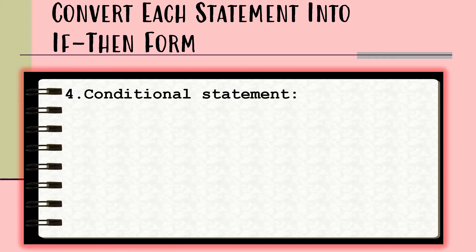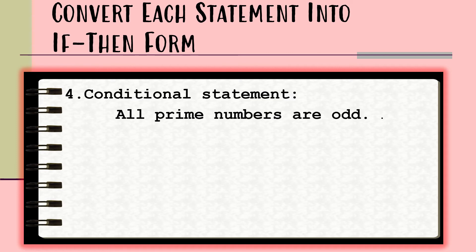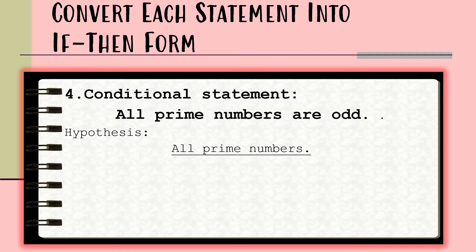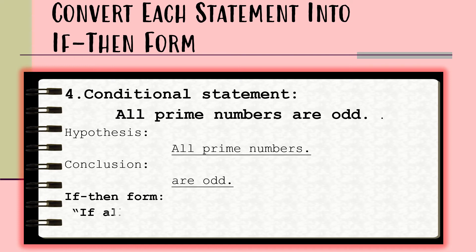For number four, we have the conditional statement: 'All prime numbers are odd.' The hypothesis is 'all prime numbers' and the conclusion is 'are odd.' Rewriting this into its if-then form, we have: 'If all numbers are prime, then they are odd.' Remember that we may reword the hypothesis and conclusion depending on how it is being stated.